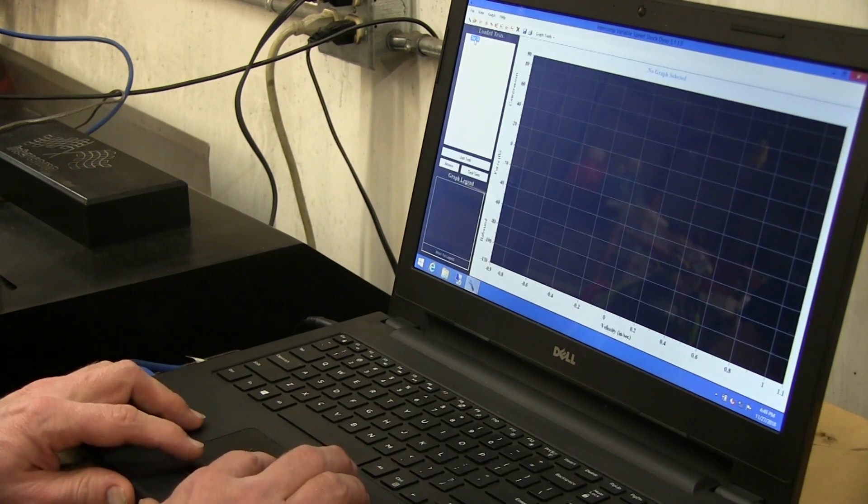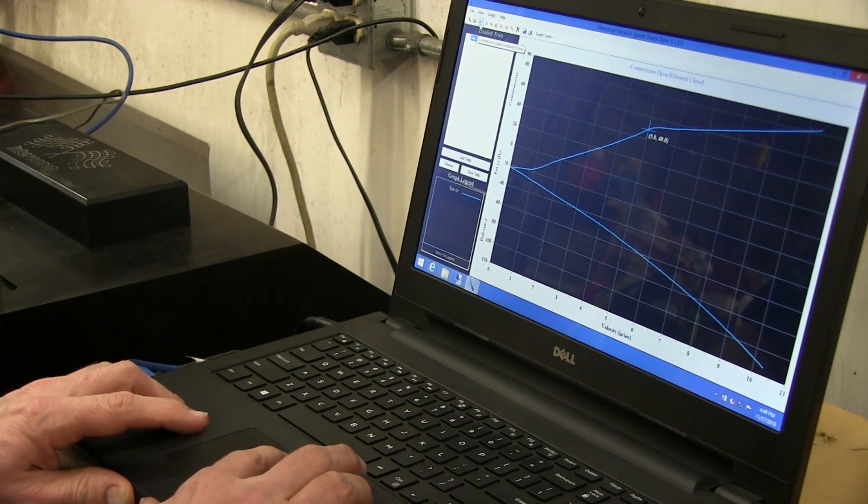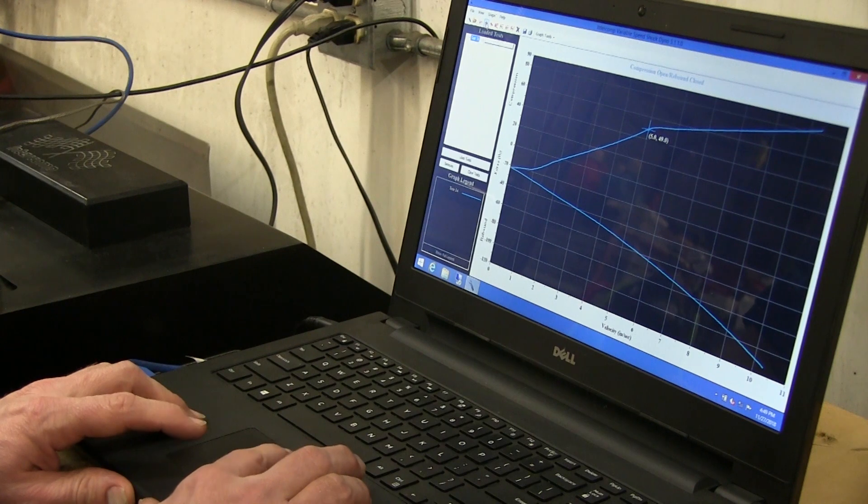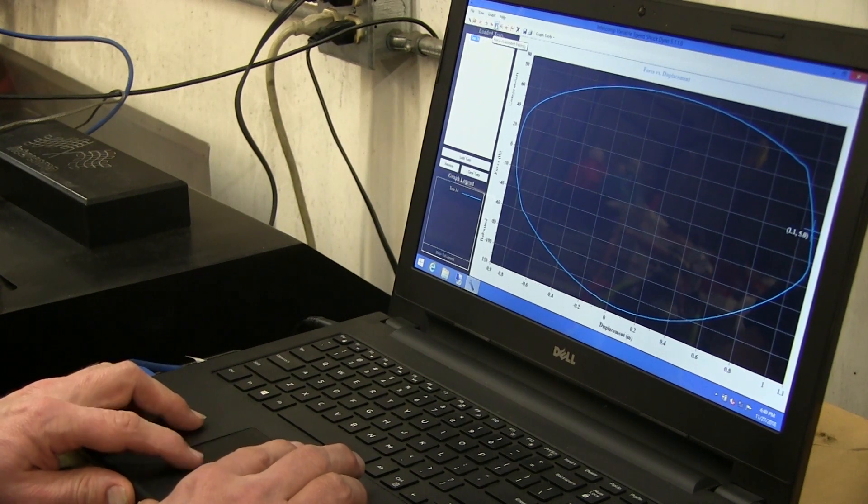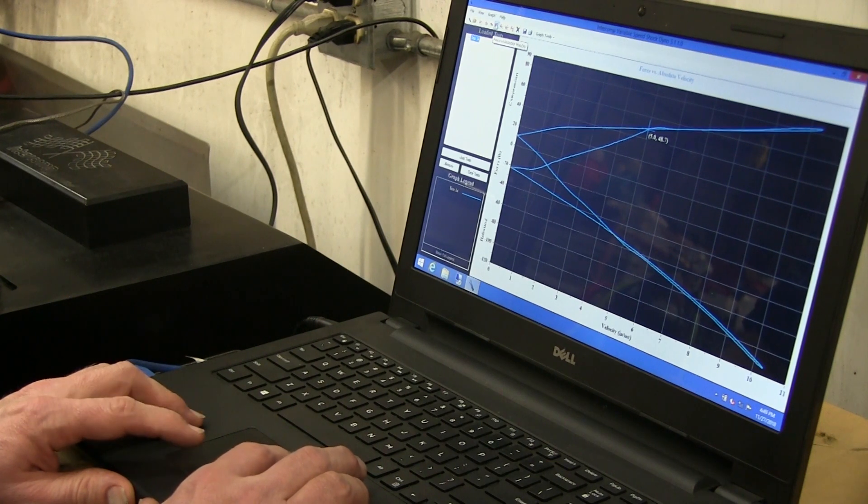I have my test loaded over here in the loaded test bank and I'm just going to take a peek at different interpretations of the graph. I can look at a force versus displacement. I can look at a force versus absolute velocity right off of the same screen.